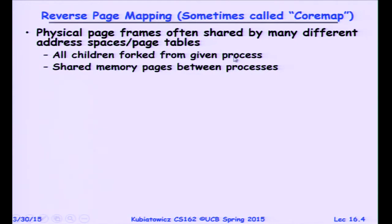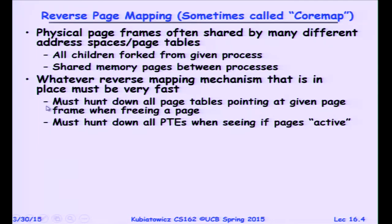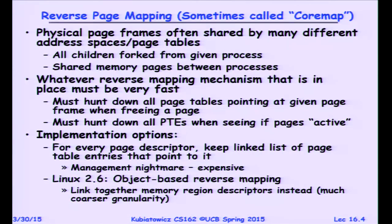I also mentioned briefly the idea of reverse page mapping, which comes up because a single physical page gets shared by multiple processes — for reasons like forking and shared memory. When we're about to kick one page out of somebody's page table back to disk, we've got to be able to trace down everybody else referencing that page quickly. There are many options: you can keep a linked list, which is expensive. Linux actually keeps regions of memory thought of as objects in a reverse list, so everything gets mapped as an object — this is a kind of reverse of a page table.